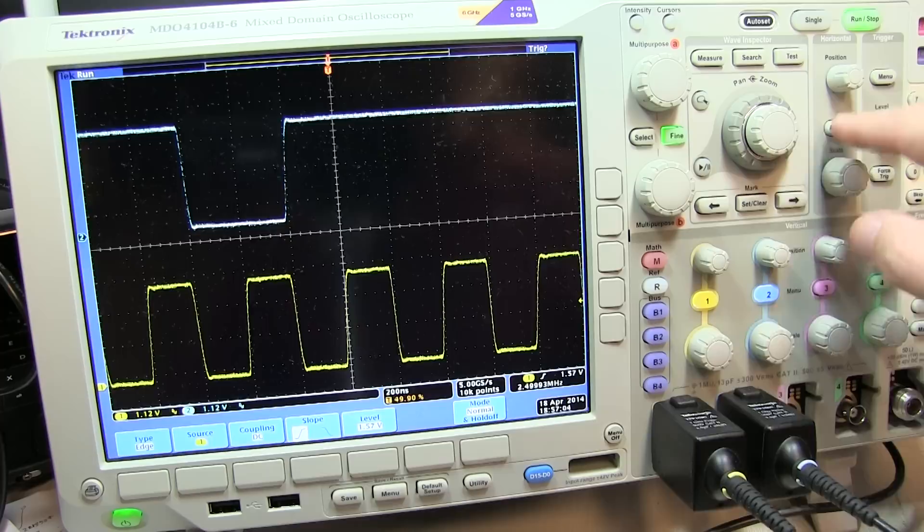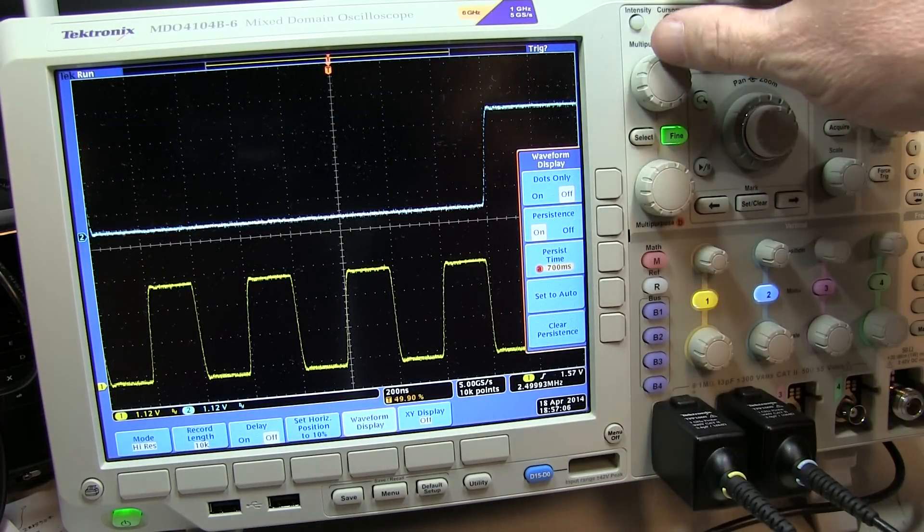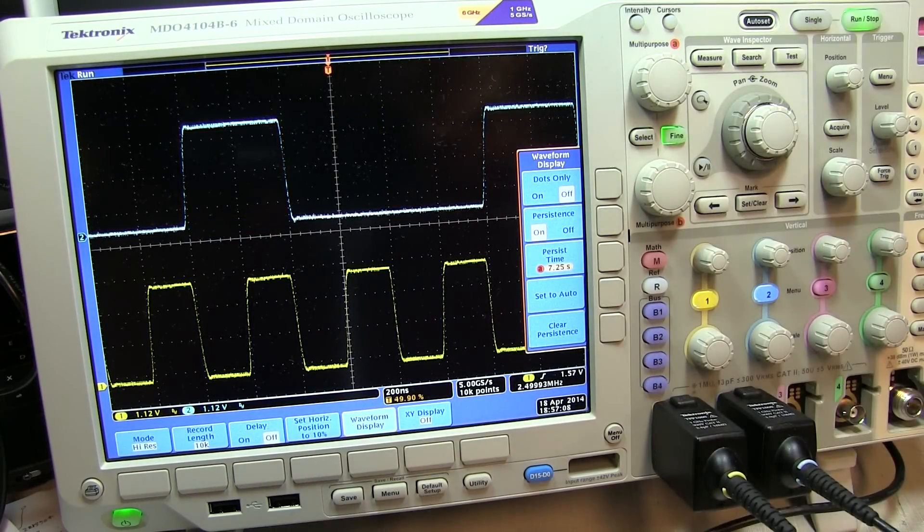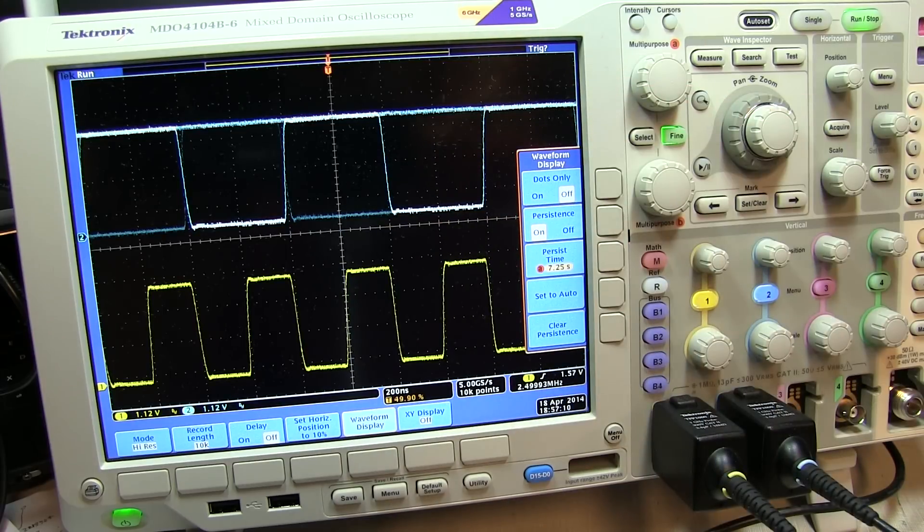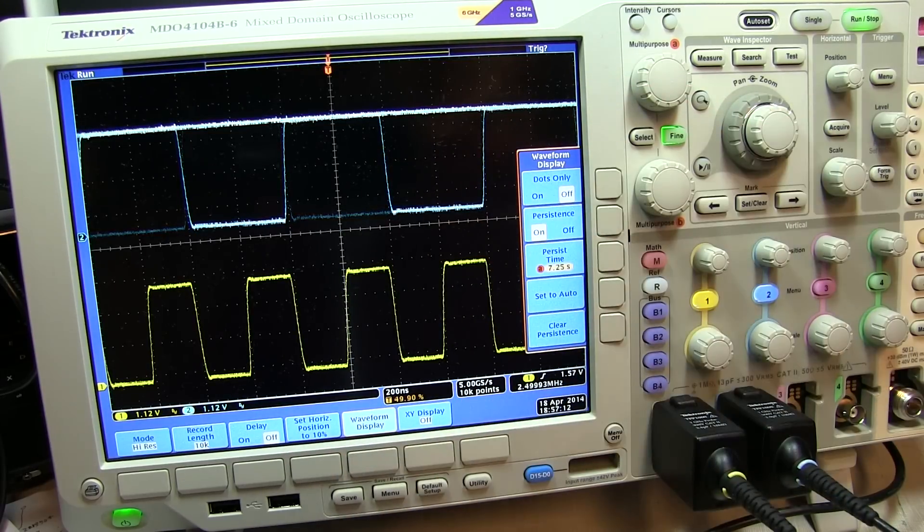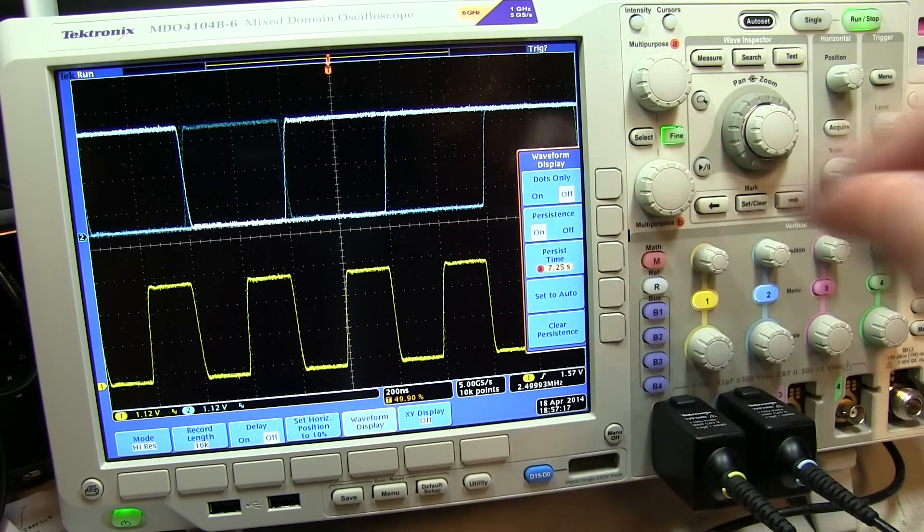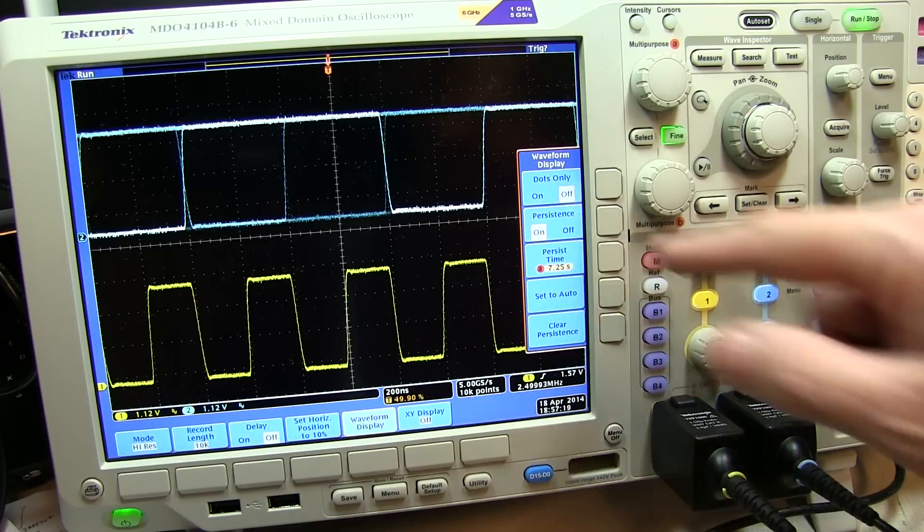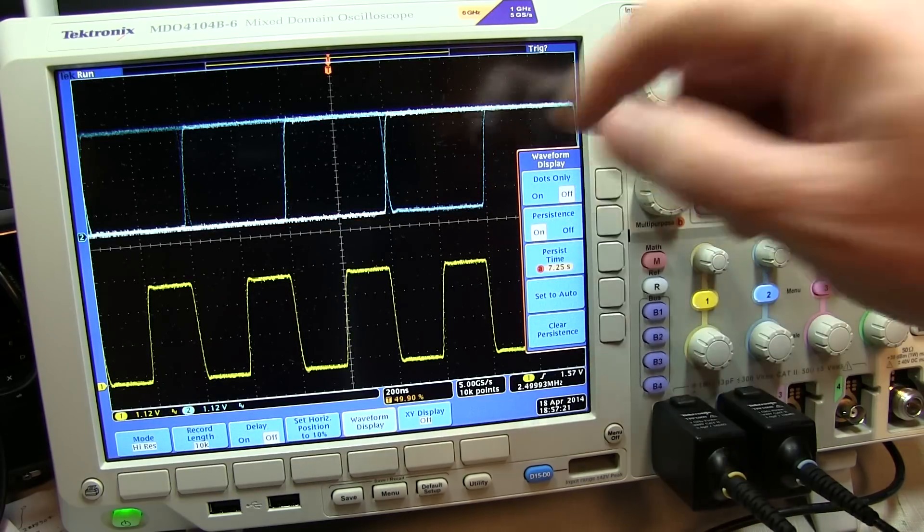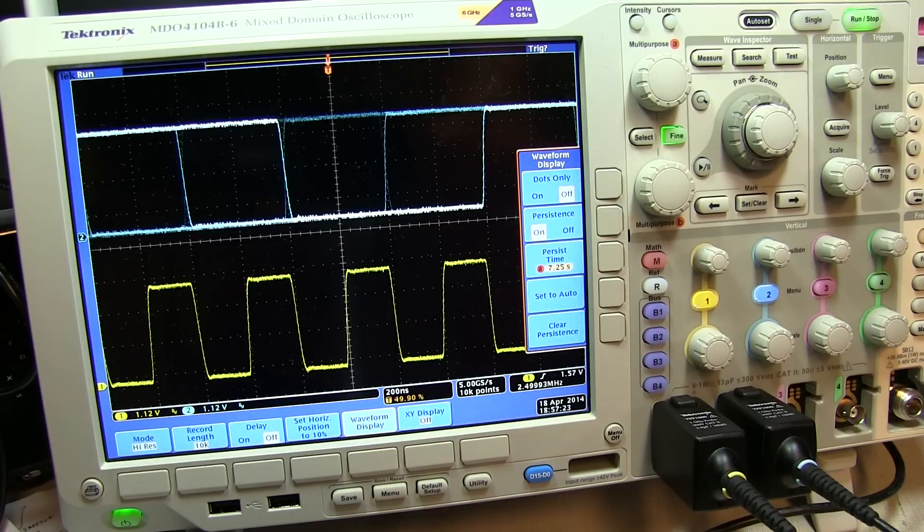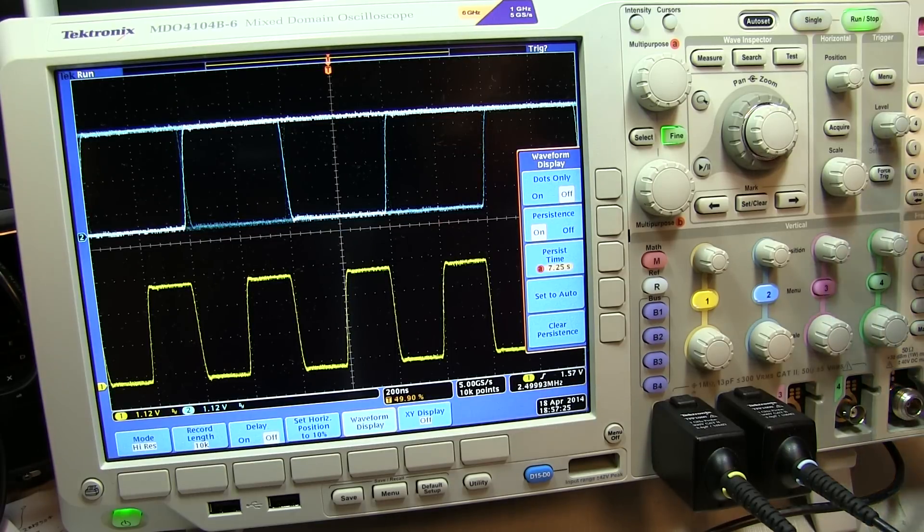If we just simply turn the persistence up here, let's go grab the persistence and turn that up, we can essentially leave those waveforms on the screen longer, and we're effectively building up the eye pattern. Over time, essentially all of the rising and falling edges, and all the rising and falling bit times, or the 0 and 1 levels, will all fill in. And that's essentially how an eye pattern is built up.